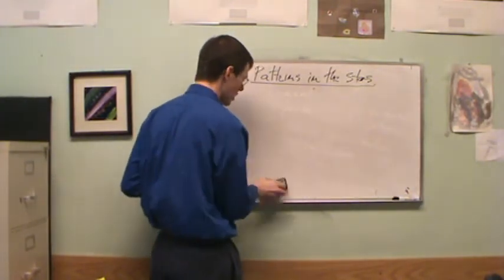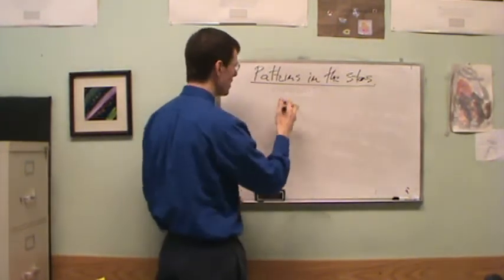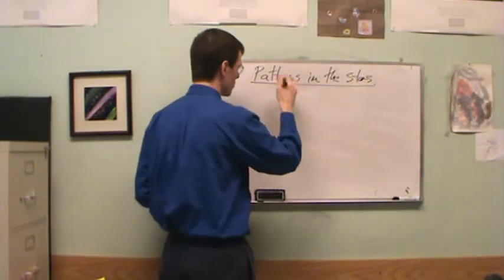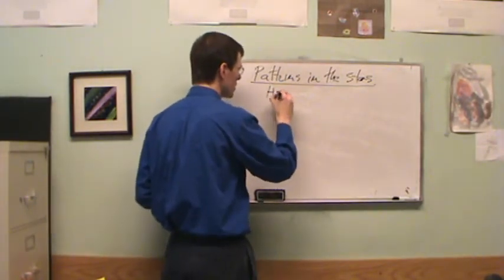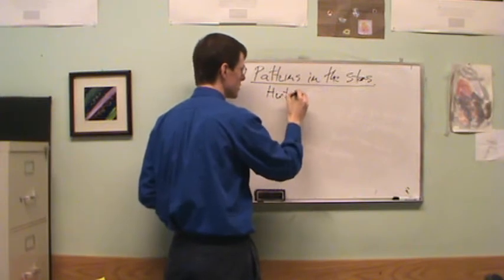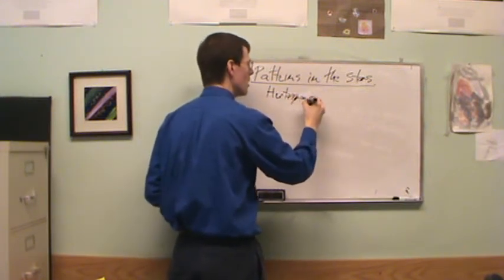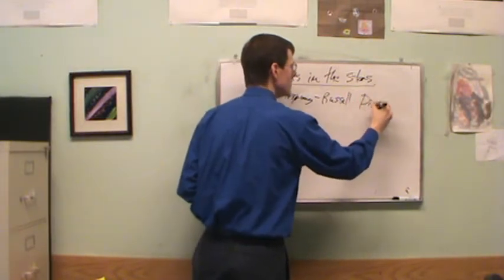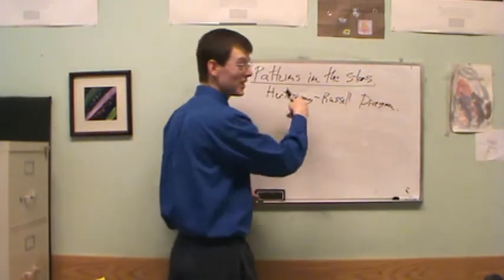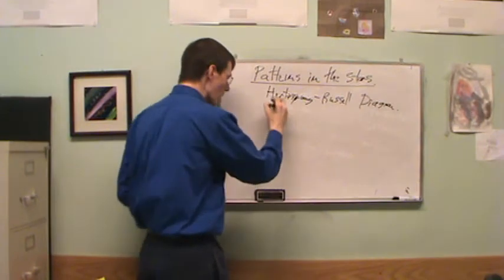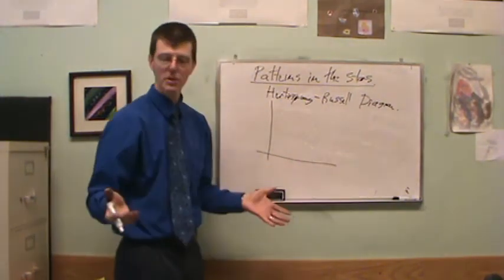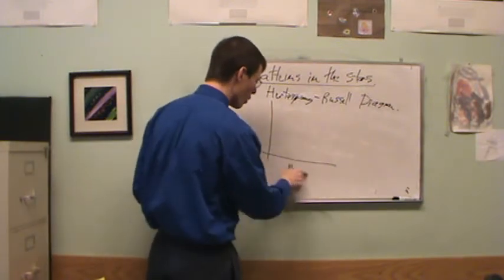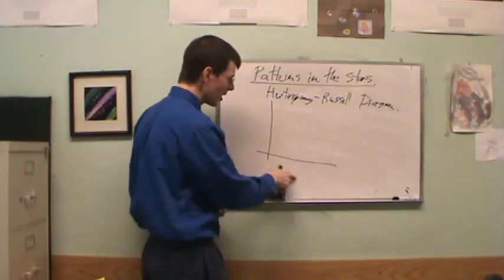So two different astronomers came up with this, basically independent of each other, Ejnar Hertzsprung and Henry Norris Russell. So this is called a Hertzsprung-Russell diagram, often abbreviated as an HR diagram. And they found out that when they plotted out luminosity and temperature, they learned some really interesting things. So let's see, on the horizontal axis, we plot temperature.